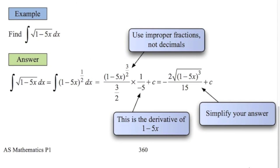Let's check out a few examples. In this one we've got the integral of root of 1 minus 5x, so the square root is the power of a half — 1 minus 5x to the power of a half. Using that formula, add 1 to the power: a half plus 1 is 1 and a half, or 3 over 2. Divide by that new number, multiply by 1 over the number in front of the x, which in this case is negative 5.